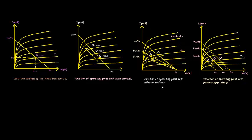Coming to the next one — variation of operating point with collector resistor RC. I considered three collector resistor values: RC1, RC2, and RC3, keeping VCC constant and drawing three lines. Note that RC1 is less than RC2 is less than RC3, because as the divisor increases the value decreases. These give three corresponding Q-points.